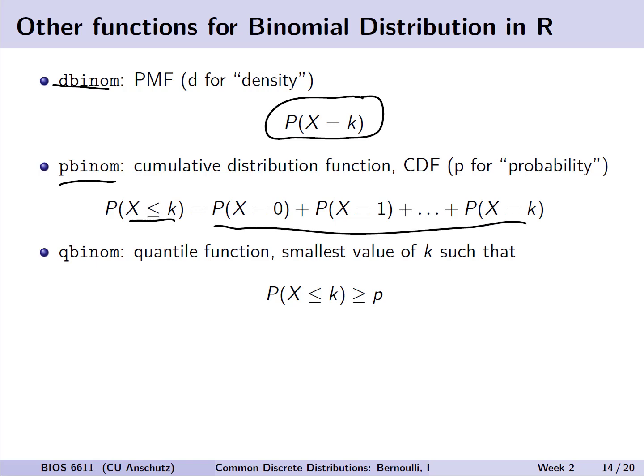Finally, if we want to know what corresponds to our binomial function or distribution, we can use qbinom to calculate the quantile function or the smallest value of k we would need or could observe, such as the probability that X is less than or equal to k is greater than some given probability value.